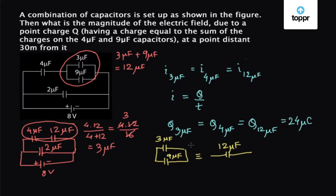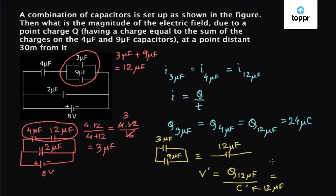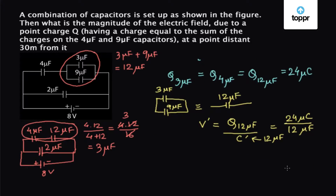So the voltage across the 9 microfarad capacitor is equal to the voltage across the 12 microfarad capacitor. Let's say V dash is the voltage across the 12 microfarad capacitor, which is equal to the charge on the 12 microfarad capacitor divided by C dash, where C dash is 12 microfarad. The charge on the 12 microfarad capacitor is 24 microcoulombs divided by 12 microfarad, so V dash comes out to be 2 volts.